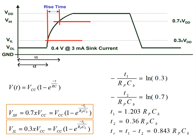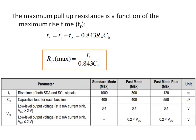Using the capacitor voltage equation, VIH equals VCC times (1 − e^(−t1/(Rp × Cb))) which equals 0.7 VCC. Similarly for VIL. Deriving both t1 and t2, the rise time equals t1 minus t2, which gives 0.843 times Rp times Cb. The maximum pull-up resistance is a function of maximum rise time: Rp(max) equals tr divided by (0.843 × Cb). For standard mode, rise time is 1 microsecond and Cb is 400 pF, so you calculate Rp(max) accordingly. Exceeding Rp(max) will affect the rise time of your pulses.